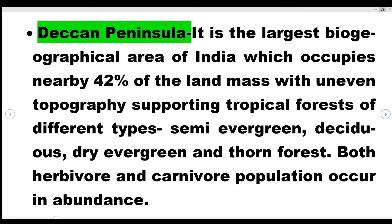The next region is the Deccan Peninsula. It is the largest biogeographical area in India, constituting 42% of the total land mass. Tropical forests of different types are found here: semi-evergreen, deciduous, dry evergreen, and thorn forest. Both herbivore and carnivore populations are found in large numbers in this region.